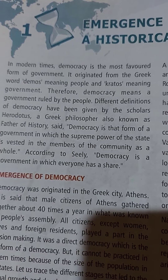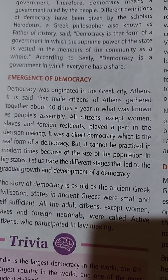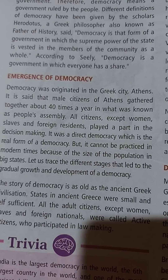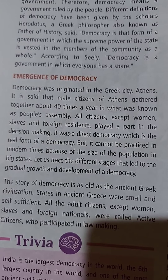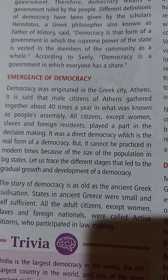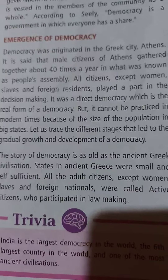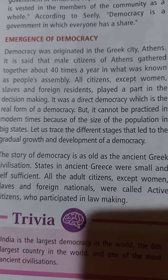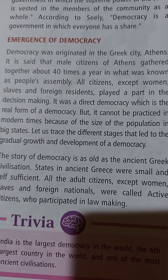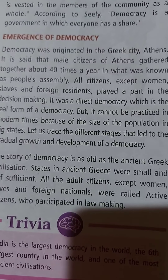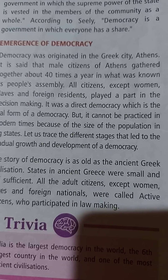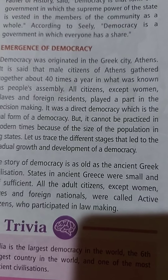It is said that male citizens of Athens gathered together about 40 times a year in what is known as the people's assembly. All citizens except women, slaves, and foreign residents played a part in decision making. It was a direct democracy, which is a real form of democracy. But it cannot be practiced in modern times because of the large size of the population in big states.